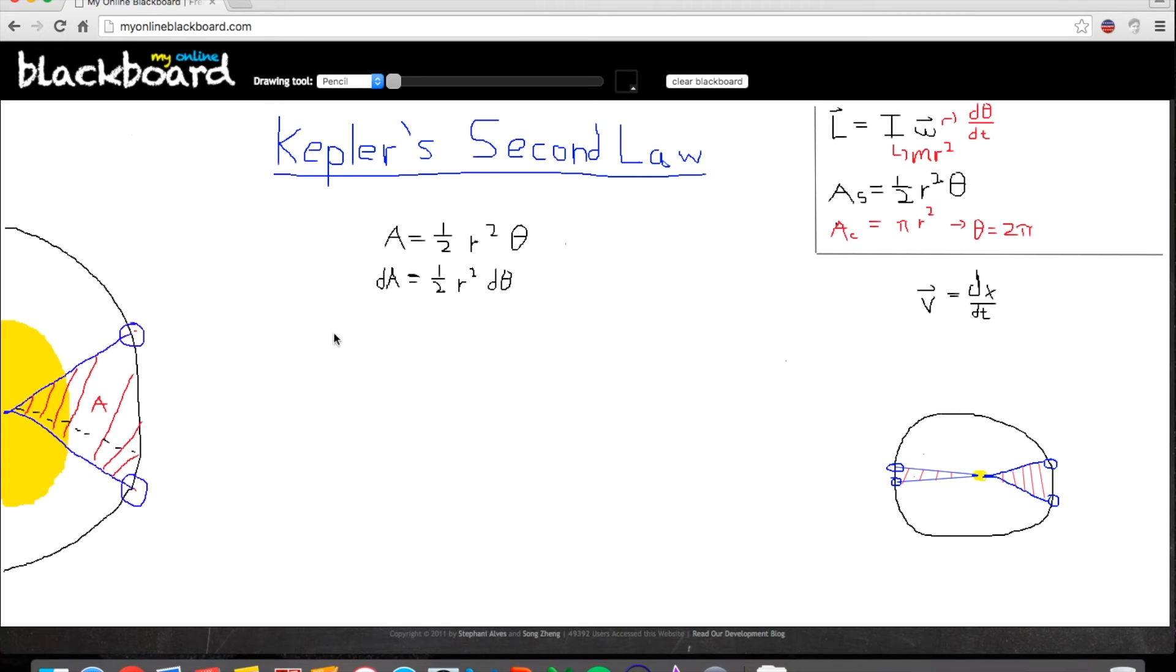Now, what we're looking for is the key to solving this is the change in area over change in time. Because what Kepler's second law says, and I probably should have explained this earlier, Kepler's law says that a planet will sweep the same amount of area in a given time. Which means that the change in area over change in time should be equal to zero. So, to visualize this, we can look at this diagram over here where we have a planet orbiting around its star.